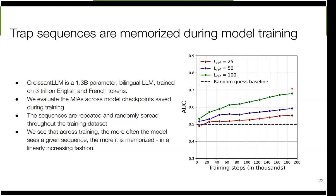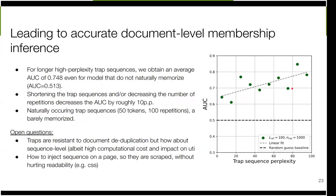Longer sequences of around 100 tokens seen approximately 100 times can be memorized, giving an AUC of around 0.68. It's not perfect, but this is a clean setup with a random baseline where we can definitively conclude that whatever we see is due to the trap sequences having been injected. We also observed that higher perplexity sequences are more likely to be memorized — there is a quite nice relationship between perplexity and AUC, with more unusual sentences being more likely to be memorized.